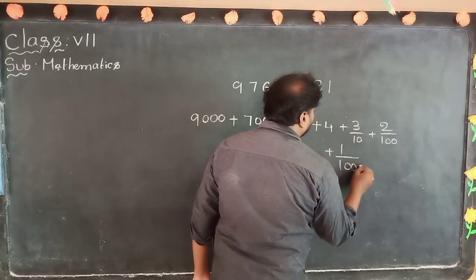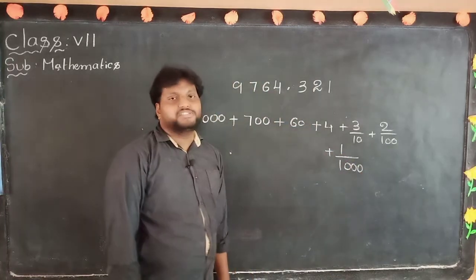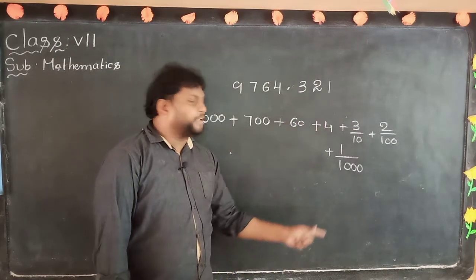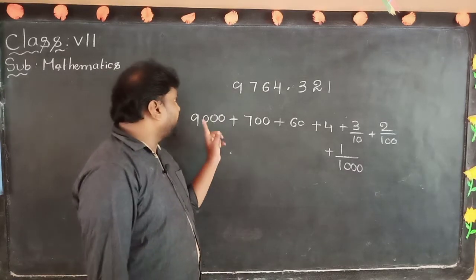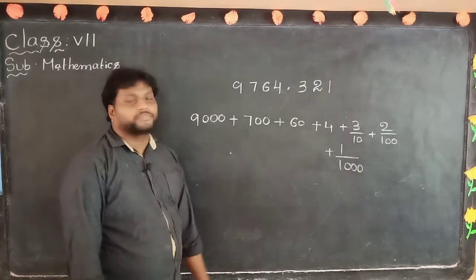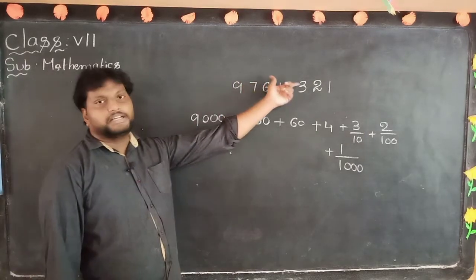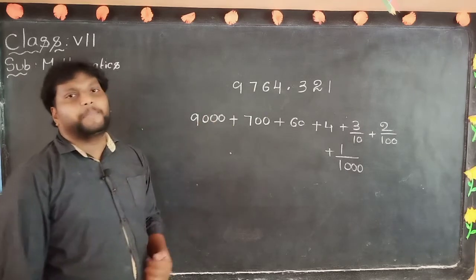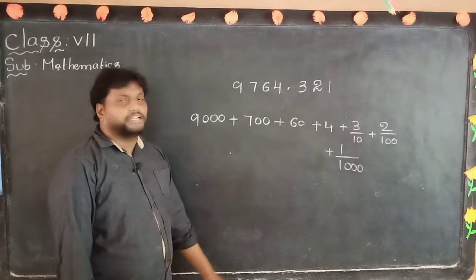Why? Because 1 is in the thousandth place — thousandth, last will come TH. 1 is in thousandth place, that's why we divide with 1000. Here 9 is in thousands place, that's why we multiply with 1000. This is the expanded form and this is the short form or standard form. We have to expand depending upon the place value.